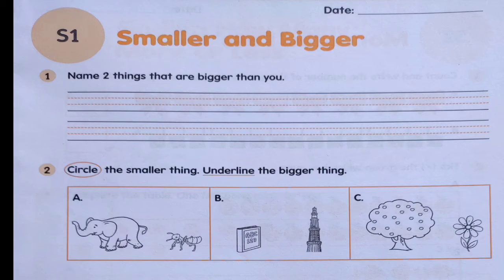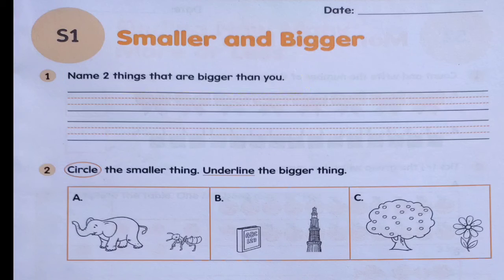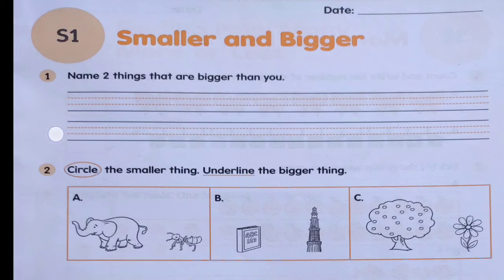Question 1 says: name 2 things that are bigger than you. You need to name 2 things that are bigger than you. Look around you and see the things that are bigger than you, and write them down here.